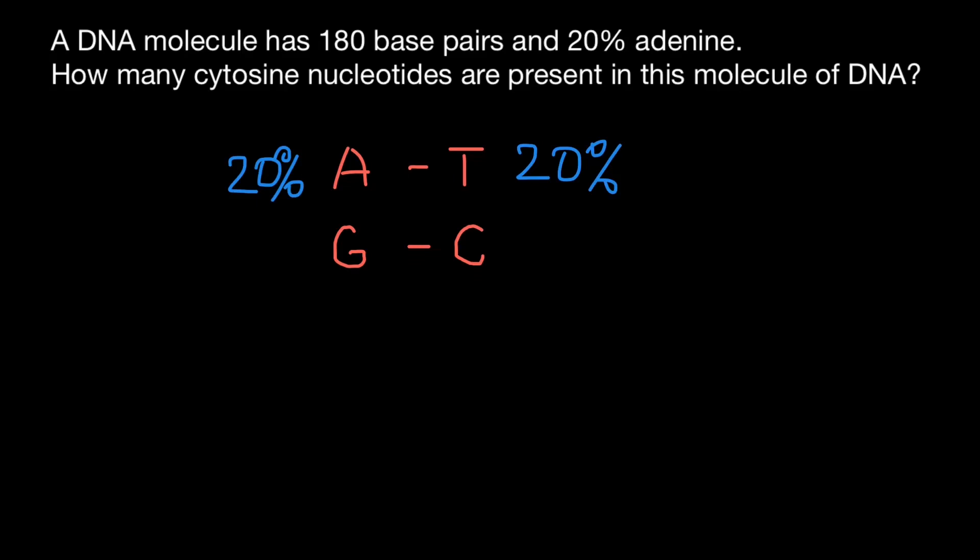would be 60%. That means that 30% would be guanine and 30% would be cytosine.